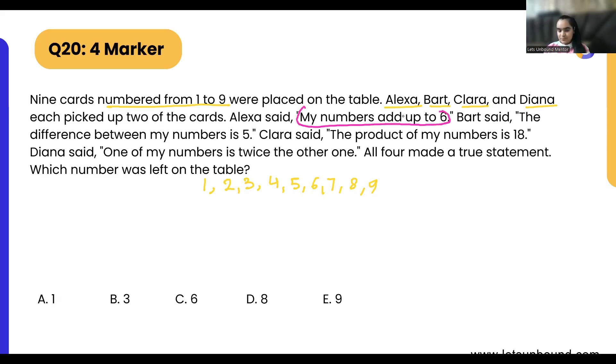Alexa said my numbers add up to six. So let's write down Alexa over here. Alexa can pick any two cards which will add up to six. She will pick from numbers smaller than six. Maybe she can pick five and one, or maybe two and four. Three and three? No, because it will be the same number. So Alexa can pick either one and five, or two and four.